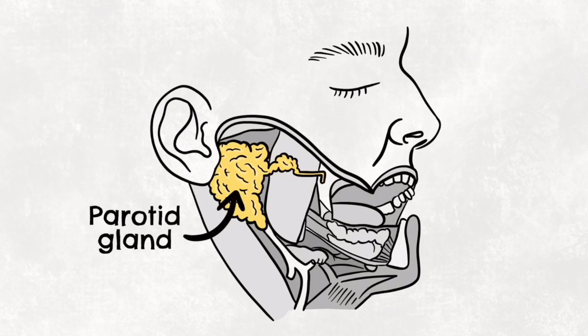The parotid gland is the largest of the three salivary glands. It is positioned in the face anteriorly to the ear. Like the other salivary glands, it produces enzyme-rich serous saliva, which is then secreted into the oral cavity to lubricate it and help with chewing, swallowing, phonation or speech and digestion.